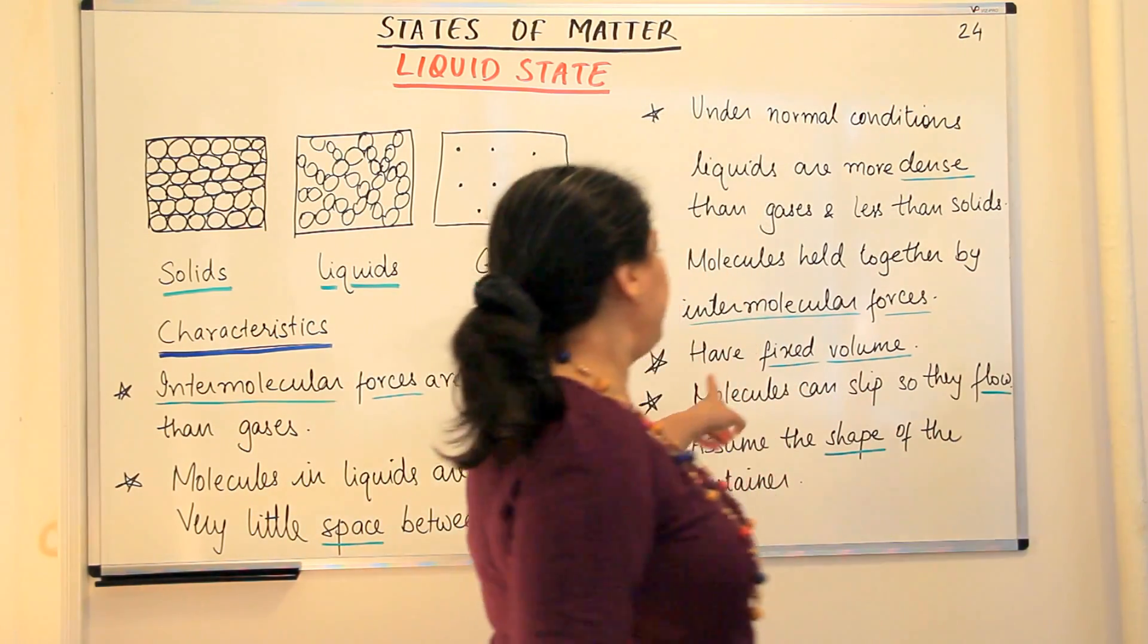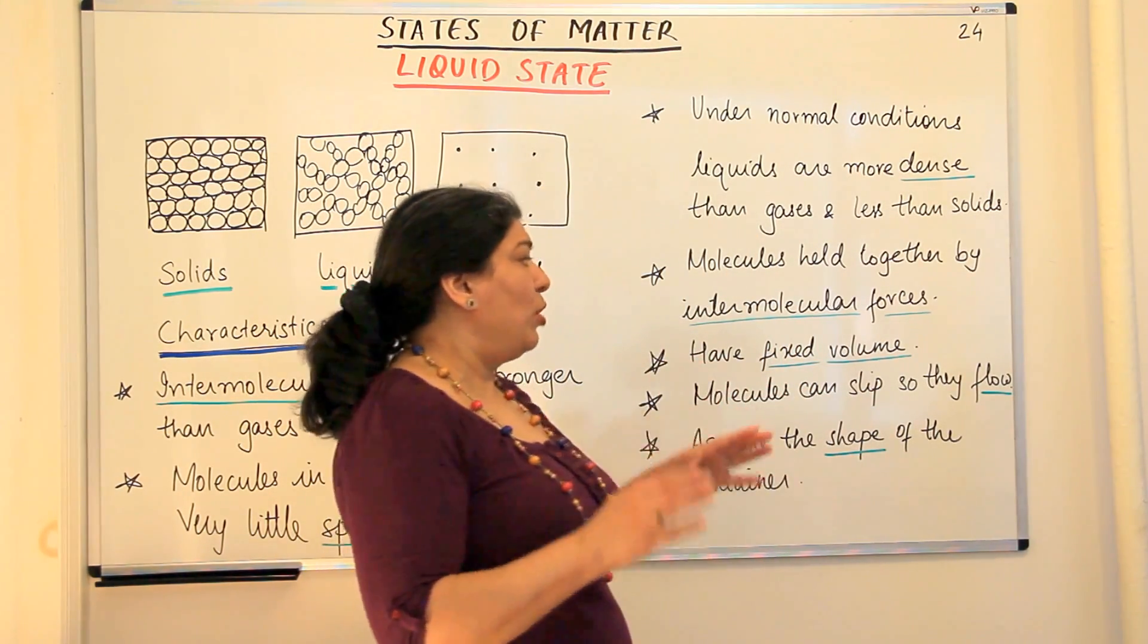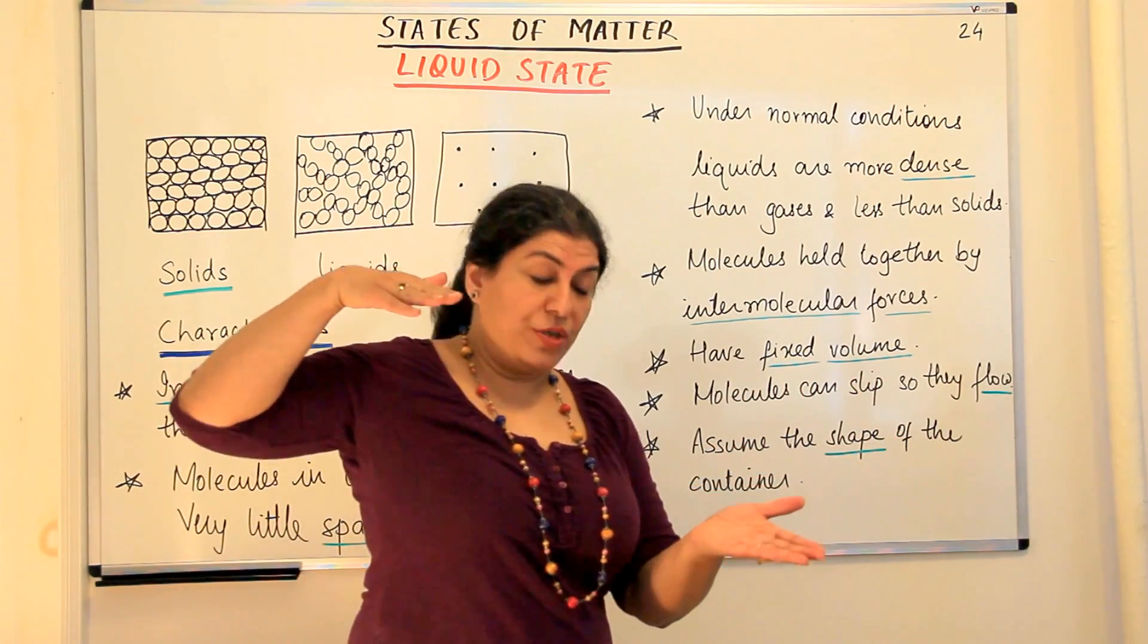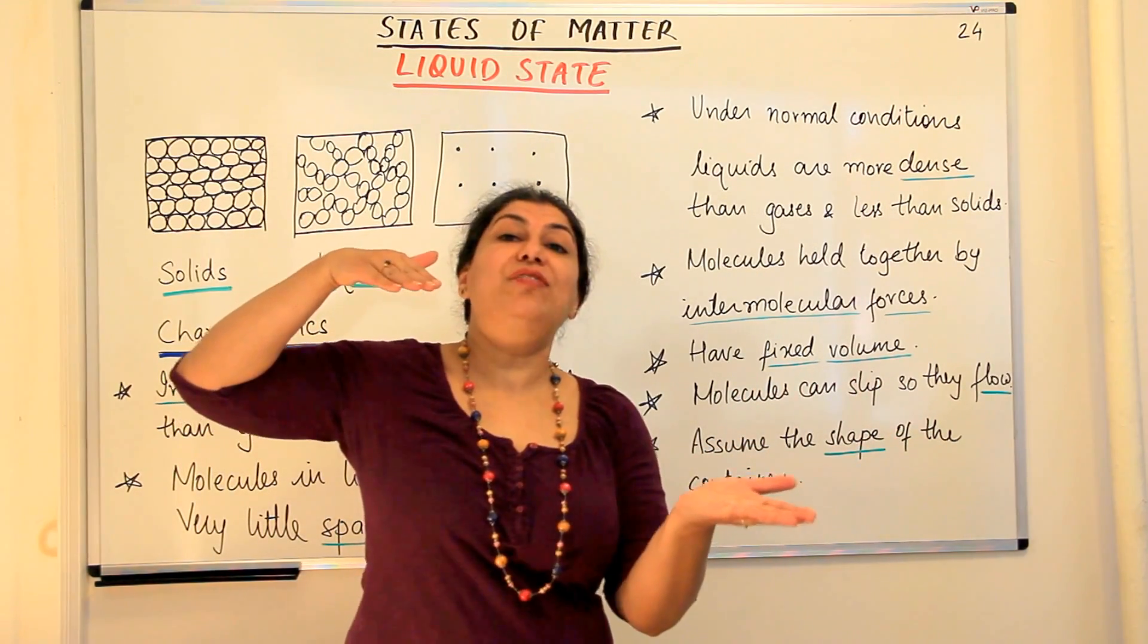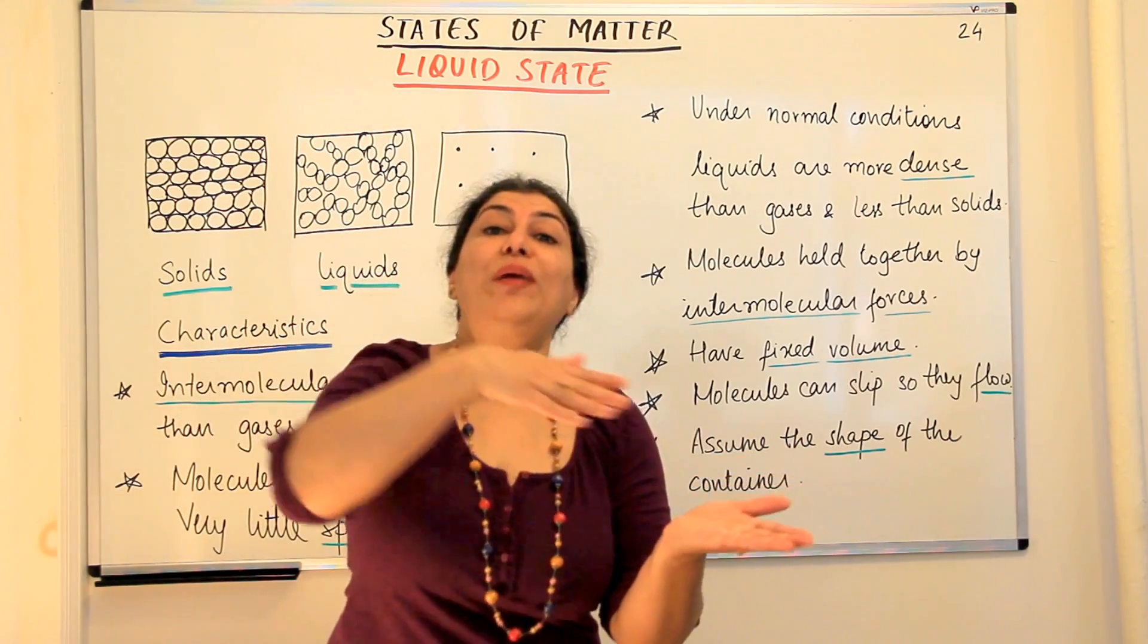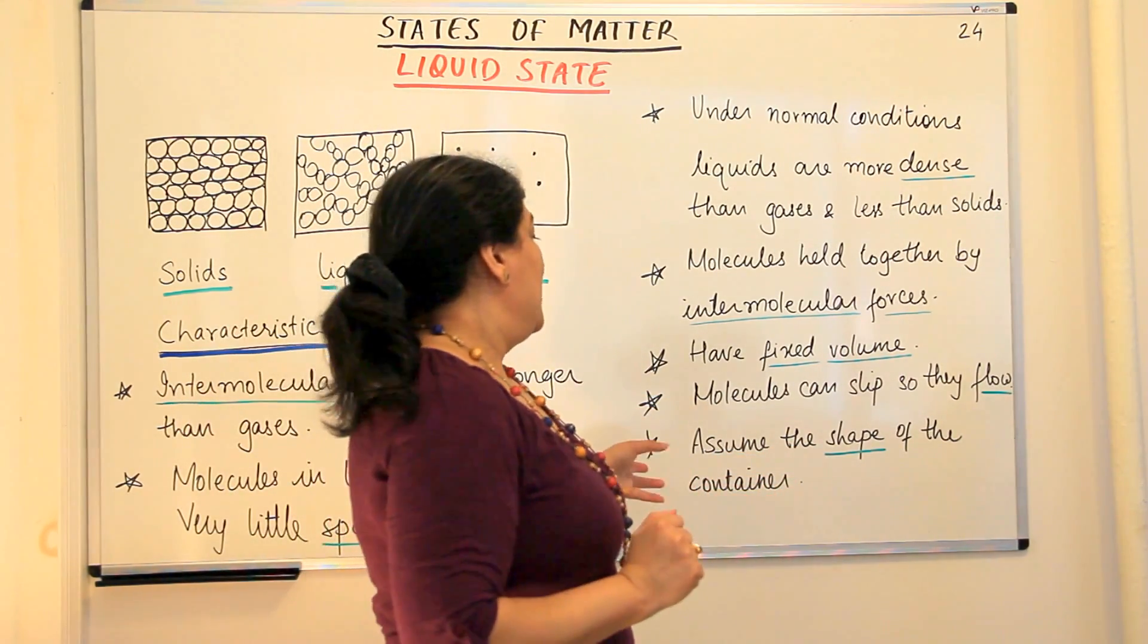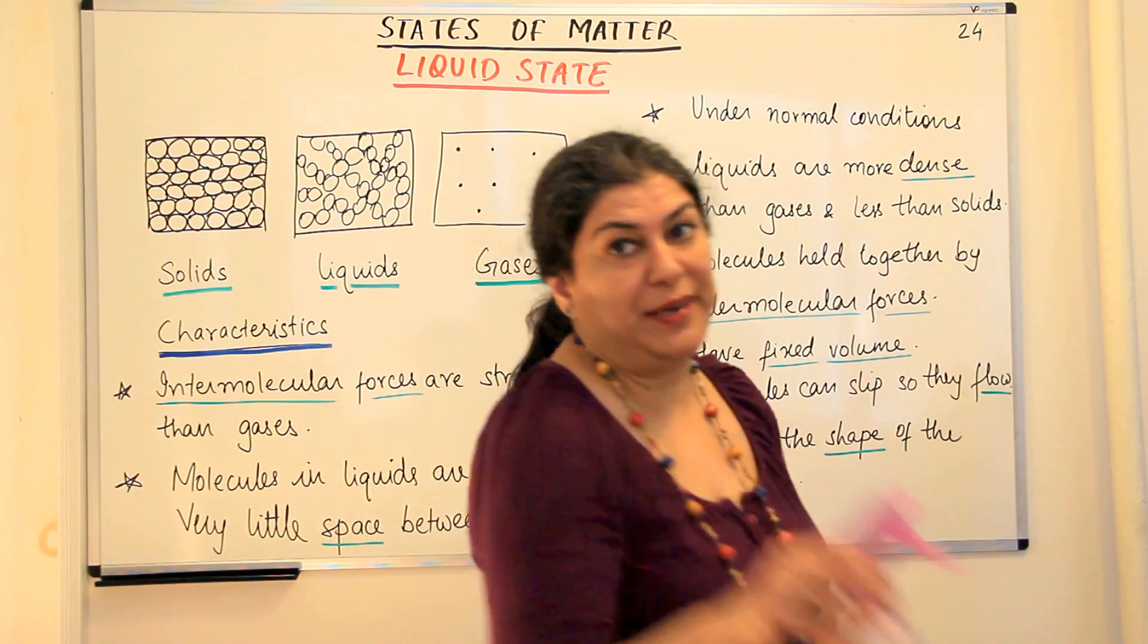So they have a fixed volume and the molecules can slip, therefore they can flow. Water, liquids have the property of flowing, they have this characteristic that they can flow and they assume the shape of the container.